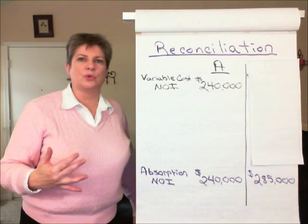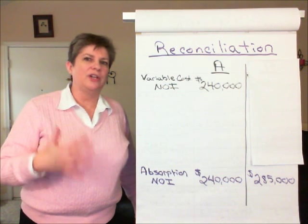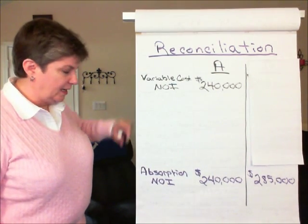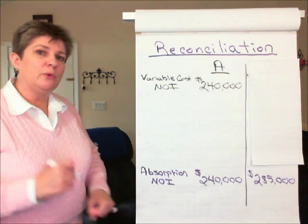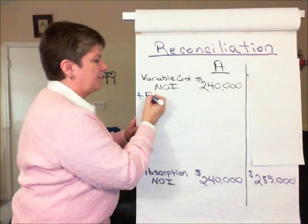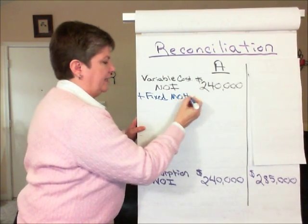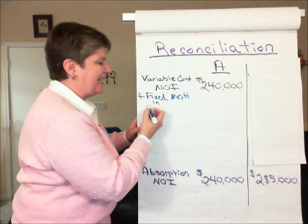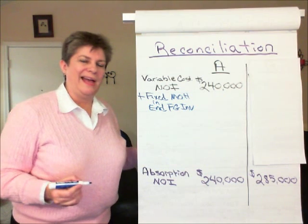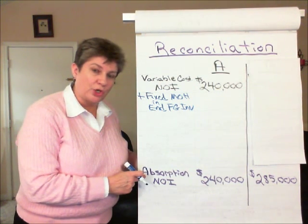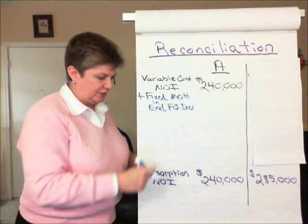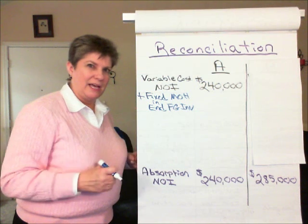We'll use this to illustrate the basic calculations in the reconciliation, and then we'll move to Scenario C where there is a difference in the incomes. In moving from variable costing net income to absorption costing net income, the first thing we want to do is add to variable costing net income the fixed manufacturing overhead that is in ending finished goods inventory. Under absorption costing, that fixed overhead gets deferred through ending inventory, so in moving from variable costing to absorption, we add back that fixed overhead that is deferred.